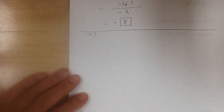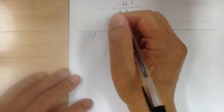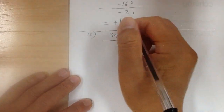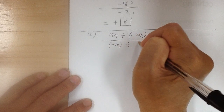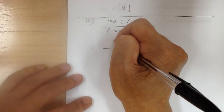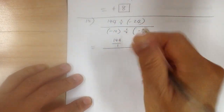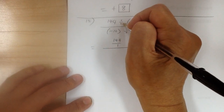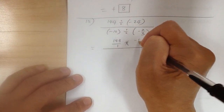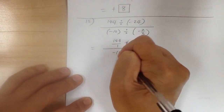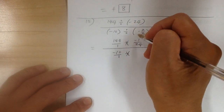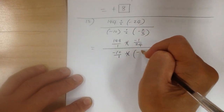Number 15. You have 144 divided by negative 24 over negative 100 divided by negative 2 over 3. I'm going to convert everything into multiplication. So I have 144 over 1, then division changes to multiplication — you flip it over — so it would be negative 1 over 24. On the bottom, I get negative 10 over 1, so division changes to multiplication; you flip it over to get negative 3 over 2.